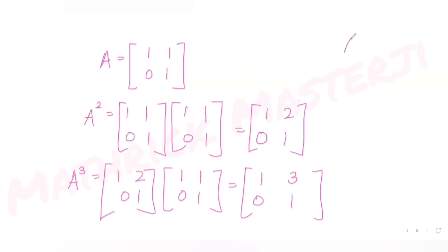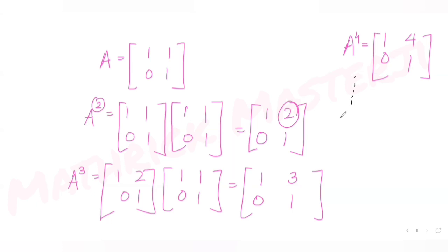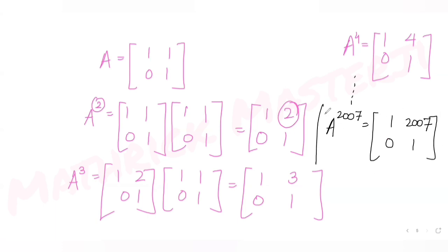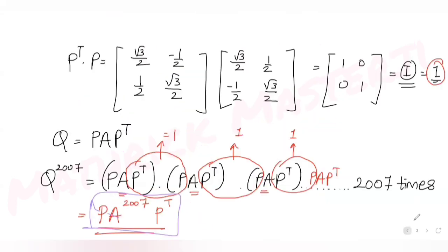From the pattern, A⁴ = [1,4; 0,1]. The off-diagonal element equals the power of the matrix while the diagonal stays 1 and the bottom-left stays 0. Following this pattern, A^2007 = [1,2007; 0,1].